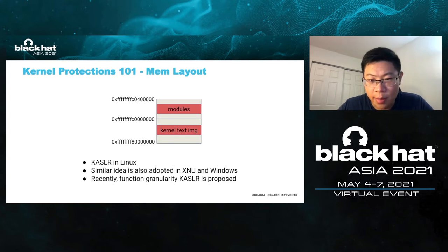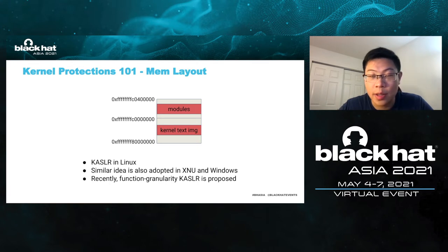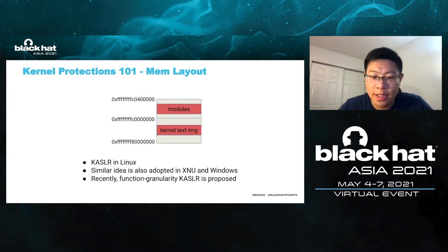This is the first shortcoming of KASLR. Another shortcoming is low entropy, since there are only so many locations a kernel can fit in — some think an attacker can guess the base address without too much trouble. As such, KASLR at function granularity is proposed. The main idea is to randomize the address of functions when loading the kernel image. The entropy is much higher at this granularity, and one leaking is far from enough to defeat this fine-granularity protection.